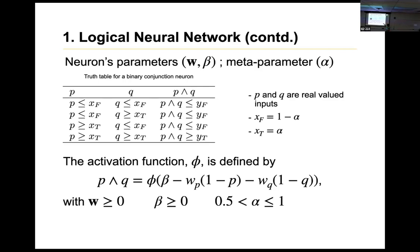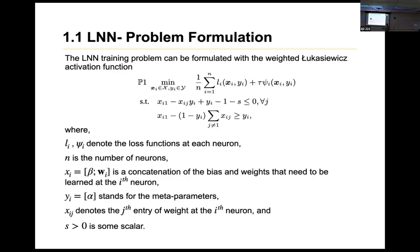Given this activation function, we try to minimize the loss for the training function. This problem of minimizing the loss can be formulated using Łukasiewicz logic, as proposed by the authors. Using that logic, we can formulate the training part of the LNN using the above equation. We minimize the loss given the conditions subject to the constraints. In the rest of the paper, xi refers to the beta and weights, and yi refers to the alpha. Optimizing that function is non-convex and non-linear.